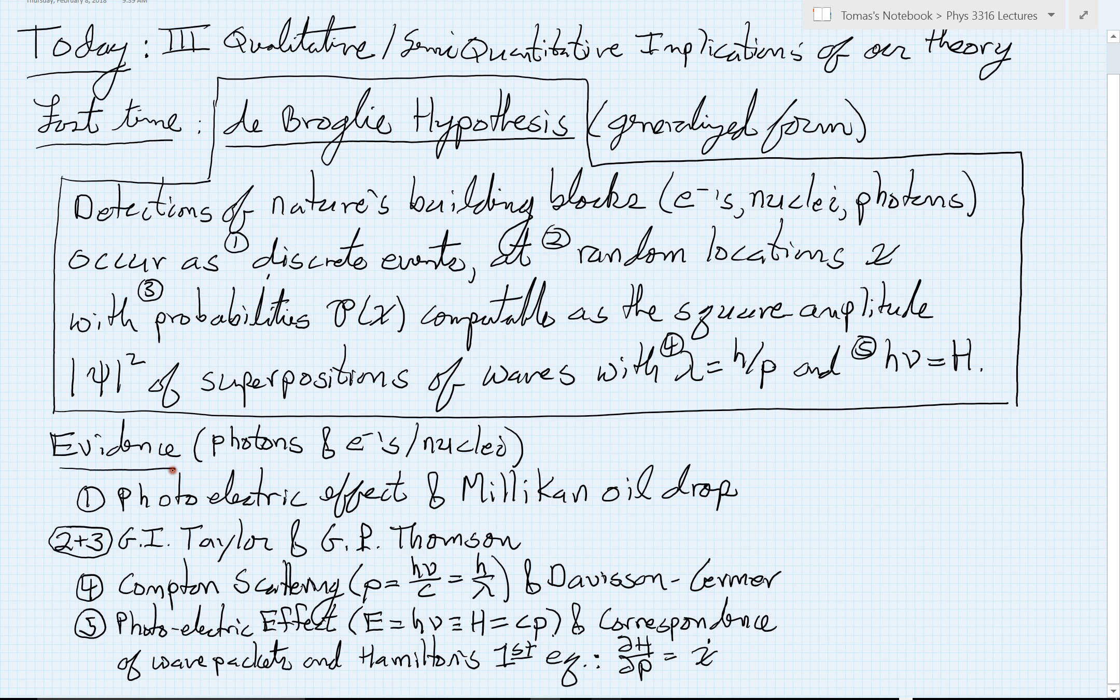Now, it's very important for us to understand the evidence for this hypothesis. Because this is where we've synthesized then all of our new experimental evidence. And then from this, we are going to then develop our theory. Right now, we will explore in a qualitative and semi-quantitative way the implications of this de Broglie hypothesis. But this hypothesis then really represents the intellectual center point of this course.